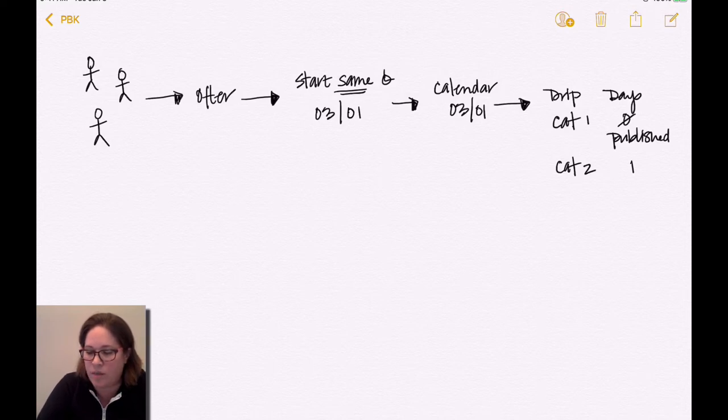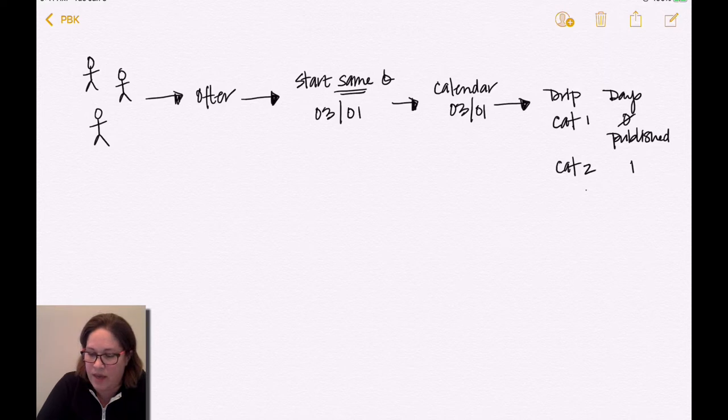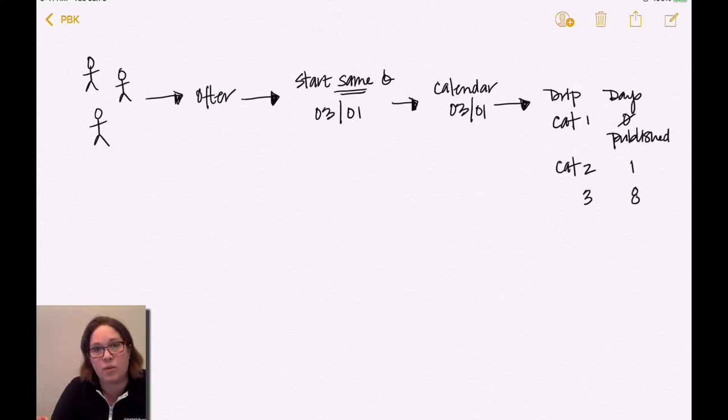We want this to drip out the next day. So that would drip out at one. Then category three might drip out seven days later at day eight, okay? So this, you would set all your content so that it's dripping.